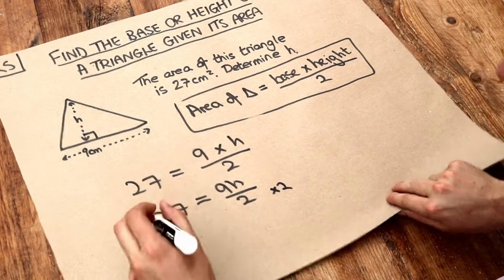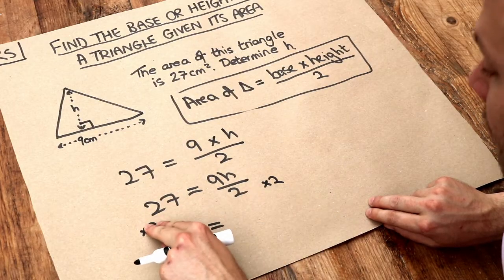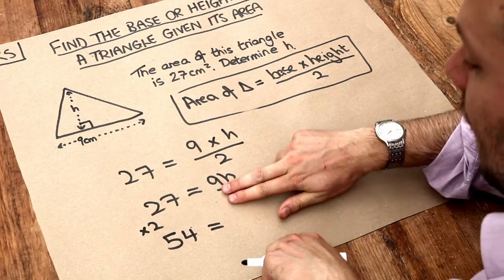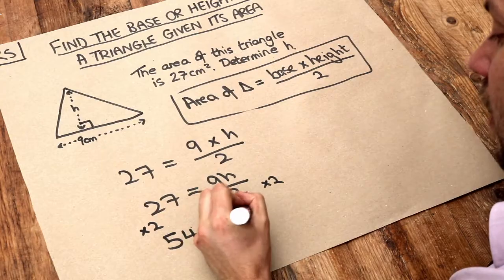So 27 times 2 is 54, and we're doing the same thing to the right hand side. Whatever we do to the left hand side we have to do the same to the right hand side. If we times by 2 that gets rid of it, cancels out that over 2, just leaving the 9h.